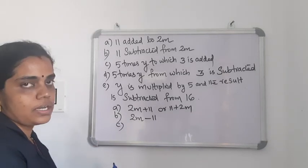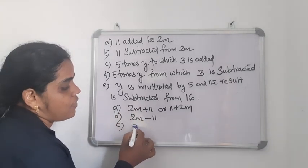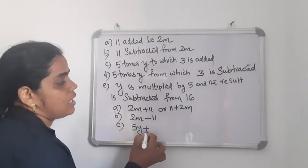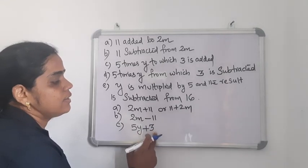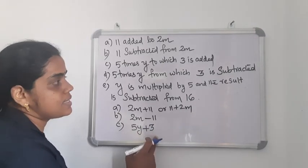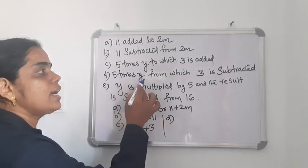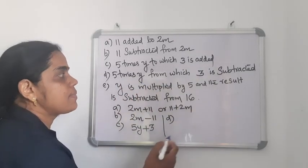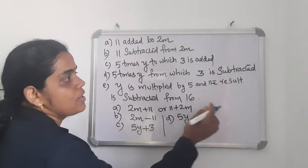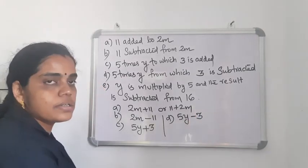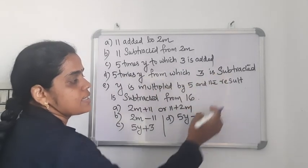5 times Y — that is multiplication — is 5Y, to which 3 is added. So the expression is 5Y plus 3. Then: 5 times Y from which 3 is subtracted. 5 times Y is 5Y, from this product we subtract 3, so the expression is 5Y minus 3.